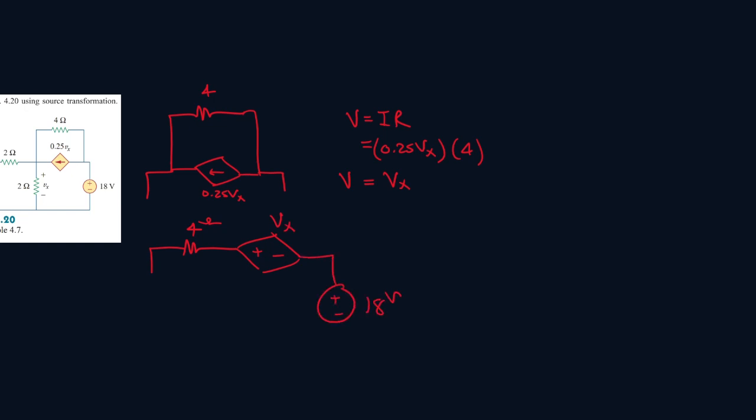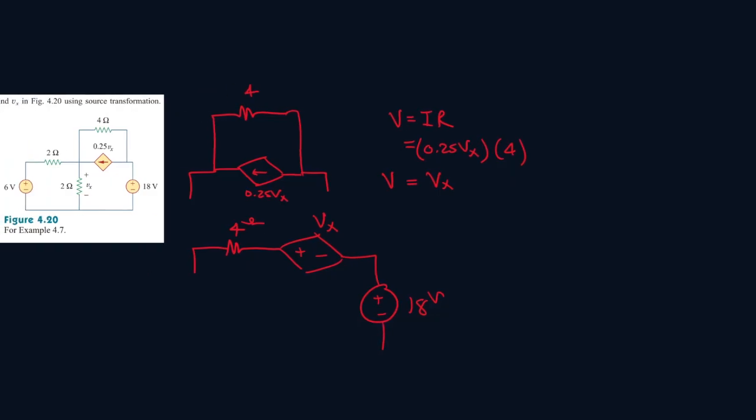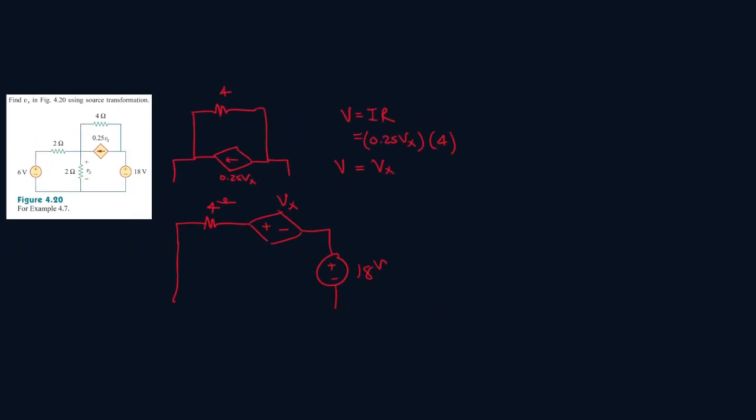And then we have 18 volts here. And let's continue doing our circuit. So this one will be 2 ohms. This one will be 2 ohms here. Plus minus Vx. This one will be 2 ohms. This one will be 6 volts.